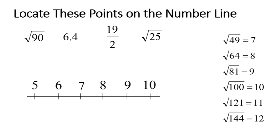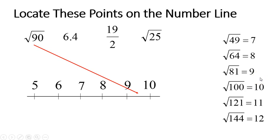Now let's look at plotting points on the number line. In this list we have an irrational number — the square root of 90 — a decimal, a fraction, and the square root of a perfect square. The square root of 90 fits between the square root of 81 and the square root of 100, so it's somewhere between 9 and 10, right around the middle.